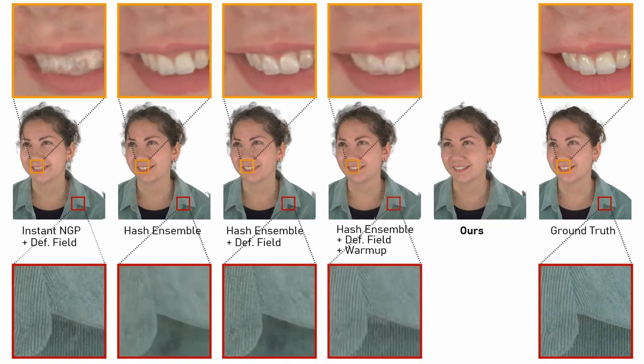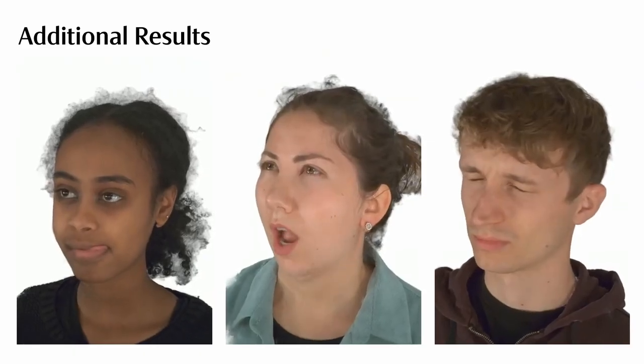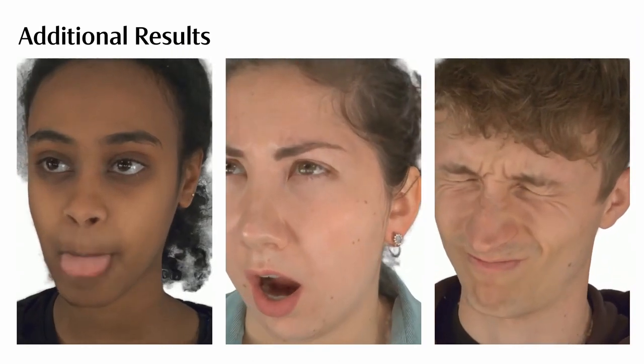By employing a warm-up phase for the deformation field, sharp detail can be reconstructed using 16 hash tables, which can be further improved by increasing the number of hash tables. Finally, we show more detailed zoom-ins to showcase the reconstruction quality of our method.